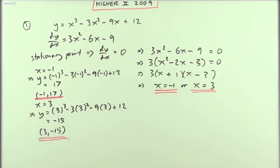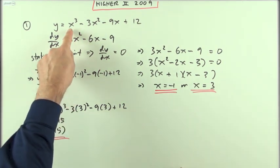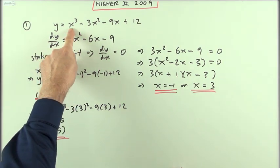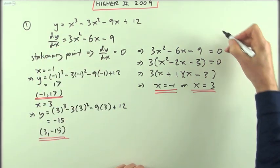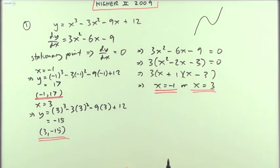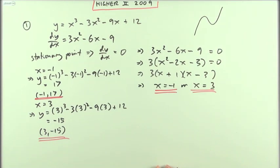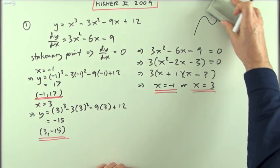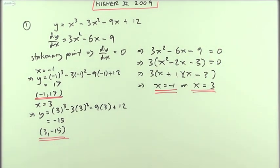Those are the stationary points. Now justify their natures. You know what they're going to be — it's a positive x-cubed graph, so it'll be a maximum then a minimum — but it did say justify it, and just saying 'it must look like that' won't cut any ice. I'll have to put down a nature table.